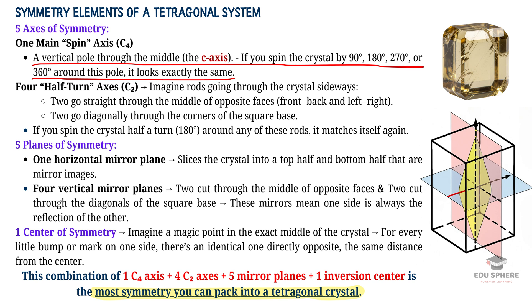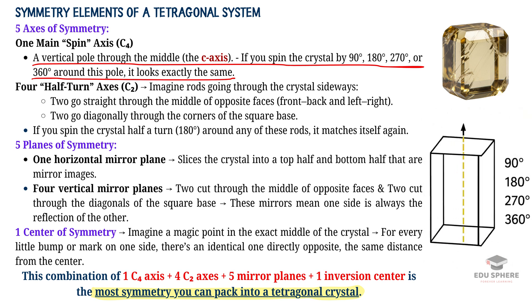This means that if you hold a tetragonal crystal and spin it around that vertical axis, it will look identical 4 times in one complete 360 degree turn. So we can say that a crystal is tetragonal if it has one and only one of these special 4-way spin axes.